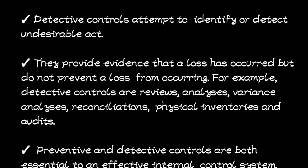Examples of detective controls include reviews — where you review something to identify what you are looking for — variance analysis to see whether there is a difference, reconciliations, physical inventories, and audits. Those are some examples of detective controls that help you identify whether a loss has occurred or not.